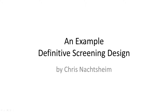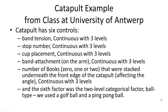Now let's look at an example of a Definitive Screening Design that Chris published in a JMP journal — a catapult example, typical of what 3M does with training people in design of experiments. The catapult has six controls: band tension (continuous, three levels), stop number (continuous, three levels), cup placement (continuous, three levels), band attachment on the arm (continuous, three levels), number of books (0, 1, or 2) stacked underneath the front edge affecting angle — treated as continuous for three levels — and a two-level categorical factor: ball type, using a golf ball and a ping pong ball. Pretty dissimilar items.